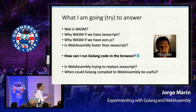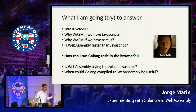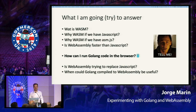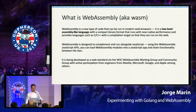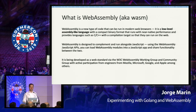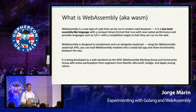What I'm going to try and answer in this talk is: what is Wasm? Why Wasm if we have JavaScript — or if we have ASM.js? Is WebAssembly faster than JavaScript? How can I run GoLang code in the browser? WebAssembly is a new type of code that runs in the web browser. It's a low-level, assembly-like language — you are not meant to write in WebAssembly — and it has a compact binary format that can run in your browser with near-native performance, providing a way to compile high-level languages like C, C++, or GoLang into a binary format closer to machine code that can be executed in all browsers.